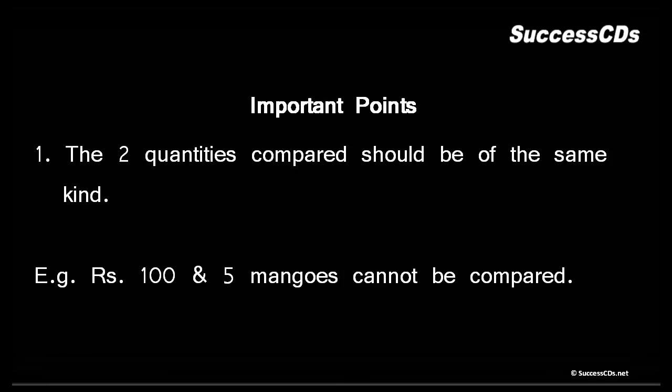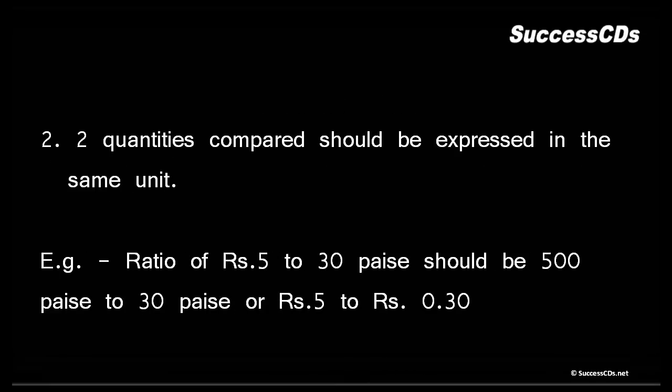Second point says two or more quantities compared should be expressed in the same unit. Let's have a look. Ratio of Rs. 5 to 30 paise has to be precisely written like 500 paise to 30 paise, or Rs. 5 to Rs. 0.30. You cannot compare rupees and paise otherwise.